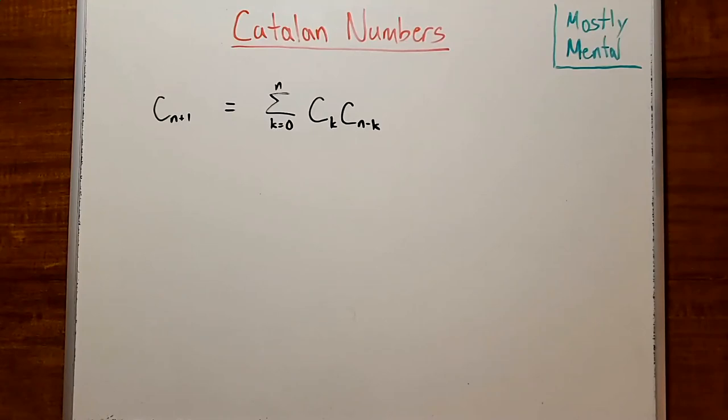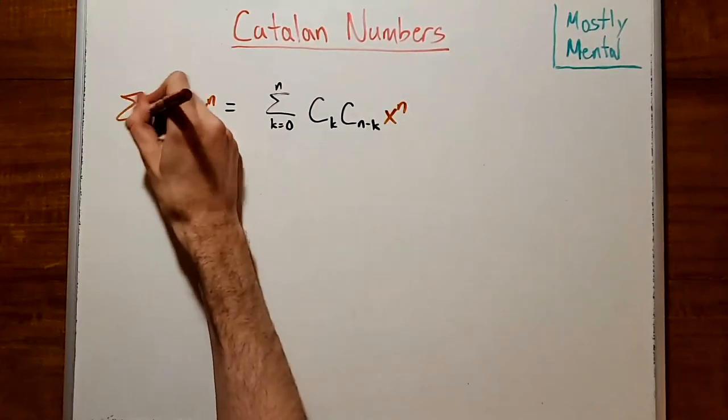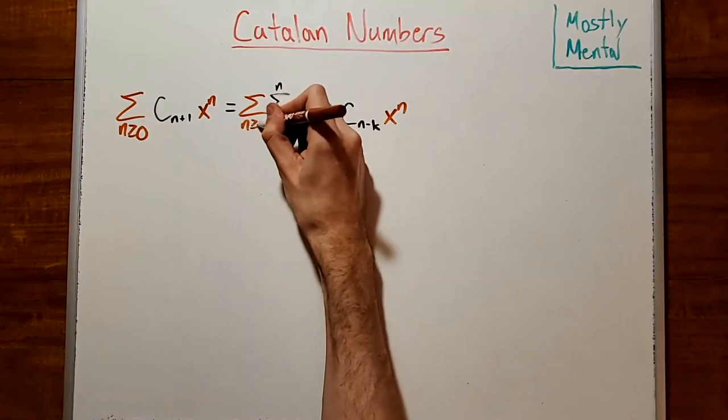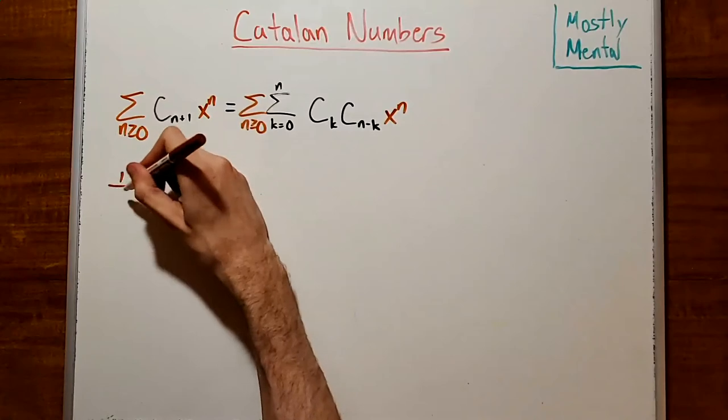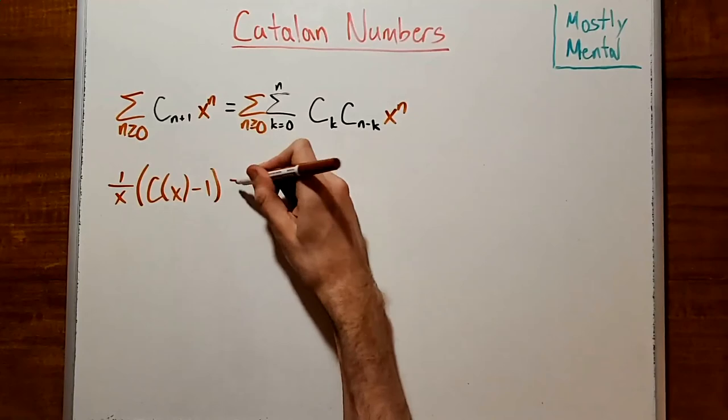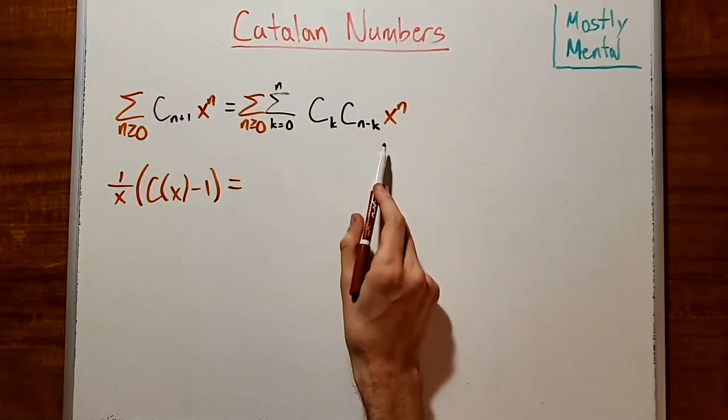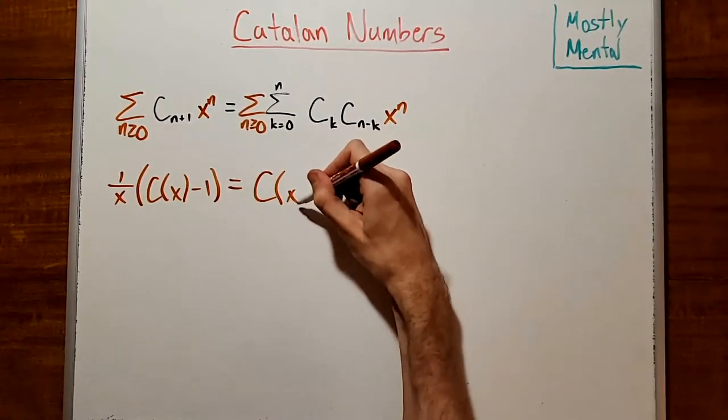Well, that means that there must be C sub k times C sub n minus k pairs of parentheses, and because k could be any number up to n, that means that this is the sum from k equals 0 to n. Now that we've got a recurrence relation, we can throw generating functions at the problem. As always, we multiply through by an appropriate power of x and take the sum over all n. This left side, as we've seen before, comes out to 1 over x times C of x minus 1, and this right side is a product of two generating functions, namely C of x times C of x, that is C of x squared.